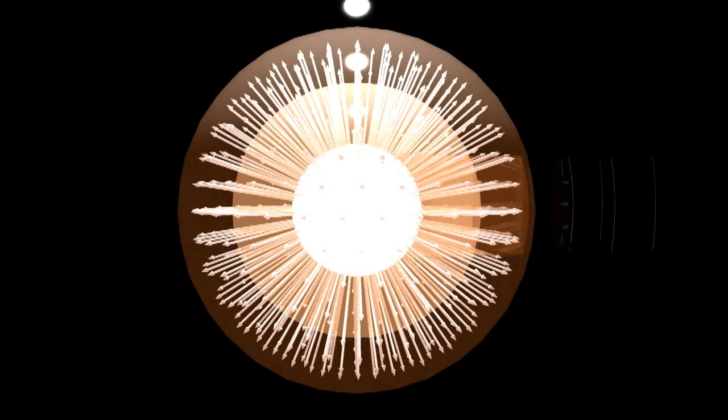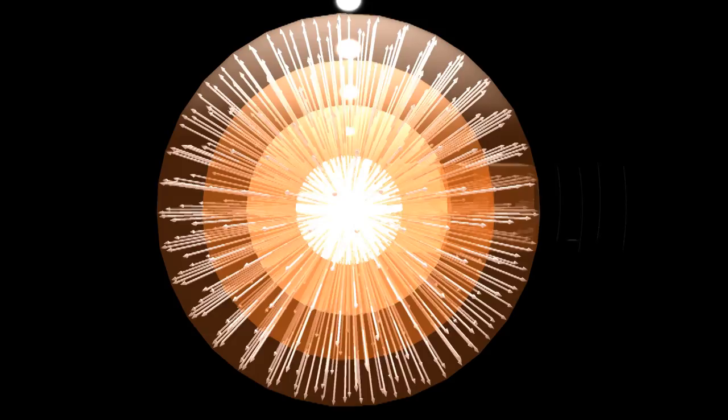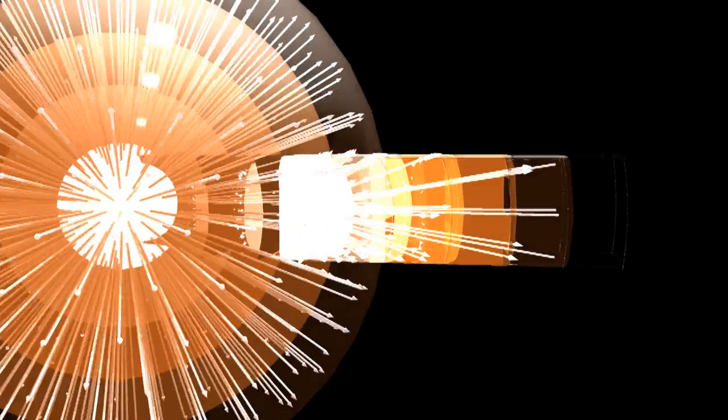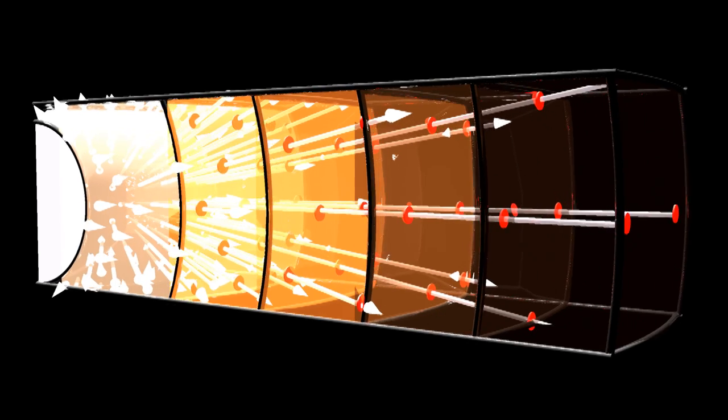The starlight radiates in all directions. The rays of light spread evenly over the surface of a sphere. The surface area increases by the square of the radius. So the star dims by that amount as you move away from it.